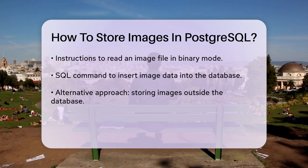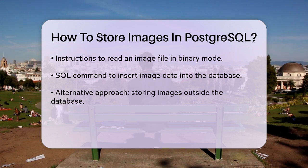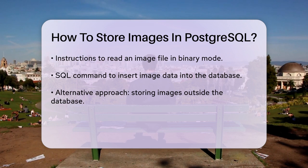Another approach is to store the images outside of the database and only store the URL or path to the image in PostgreSQL. This is particularly useful if you're dealing with large images or a high volume of them. You can upload the images to a cloud storage service like Amazon S3 and then store the S3 URL in your PostgreSQL database. When a user uploads an image, your backend API would upload the image to S3, generate the URL, and then insert that URL into your database. This way, you avoid storing large binary files directly in your database, which can improve performance and reduce storage costs.